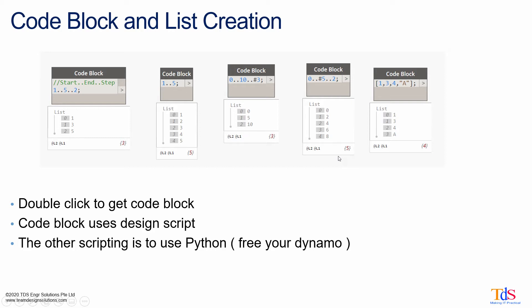To create a code block in Dynamo, you just have to double click on the workspace. This allows us to create a node very quickly. We can use code block to add multiple constants to be used in our graph very quickly, and it is much tidier than using number nodes or string nodes for each individual number and string. At the other extreme, code block can be used with the DesignScript API with additional functionality to the library.